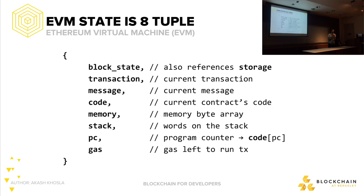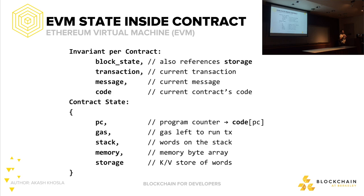The EVM state is represented as a tuple of eight parameters — things like block state, transaction, and message. What's interesting is the program counter, which is a pointer to a specific instruction that's incremented to move forward in execution. There are also parameters that are invariant per contract — they don't really change per call but change based on the entire block state.